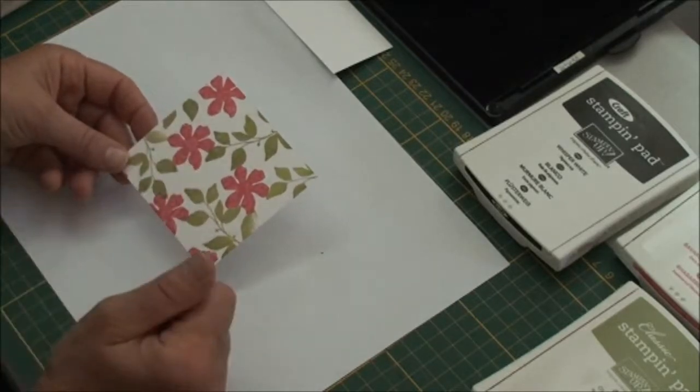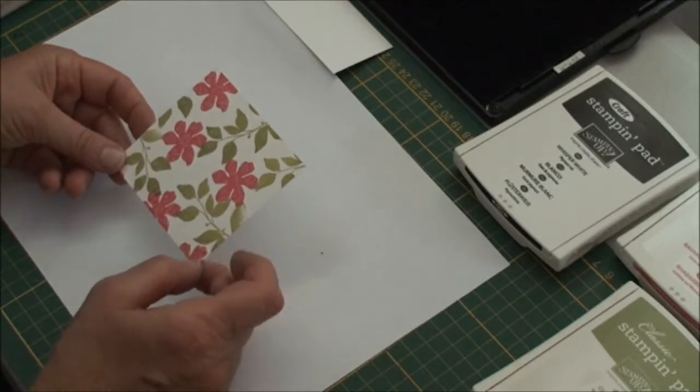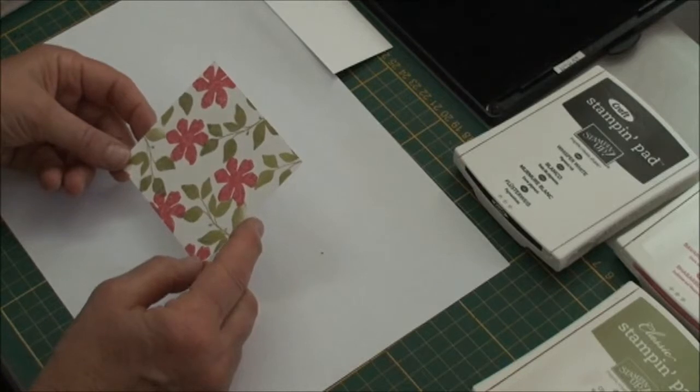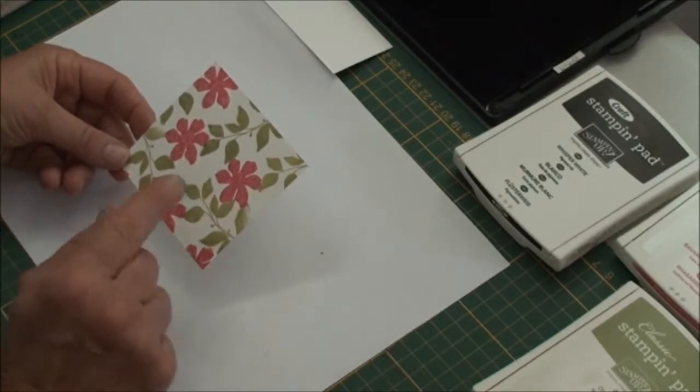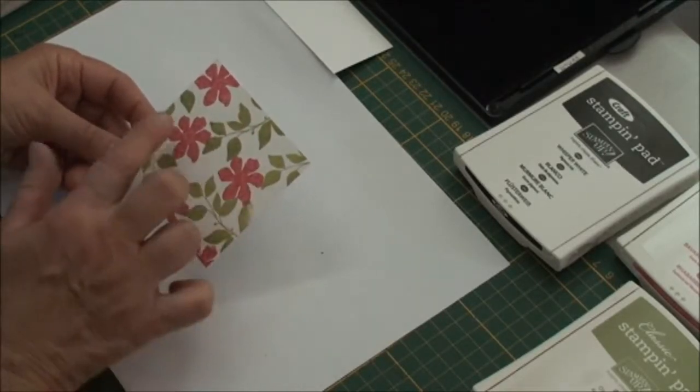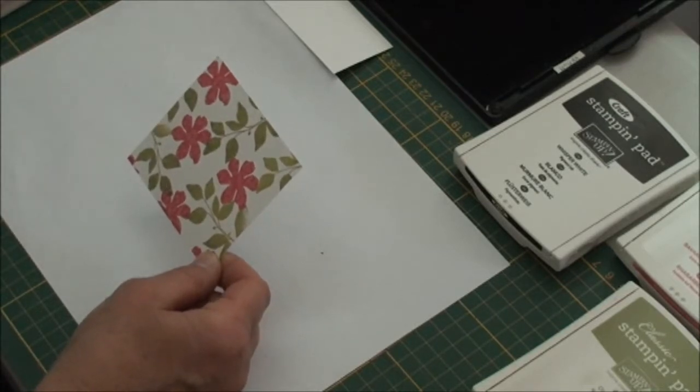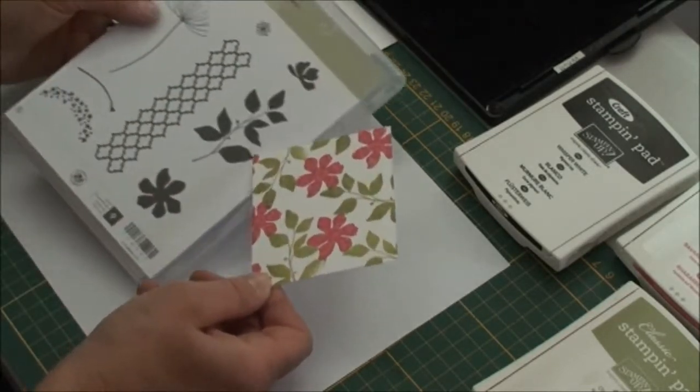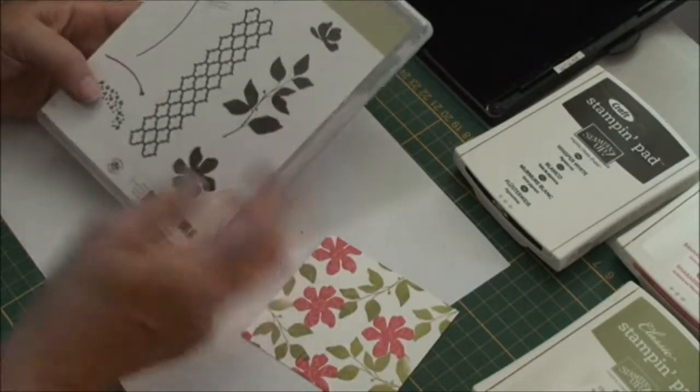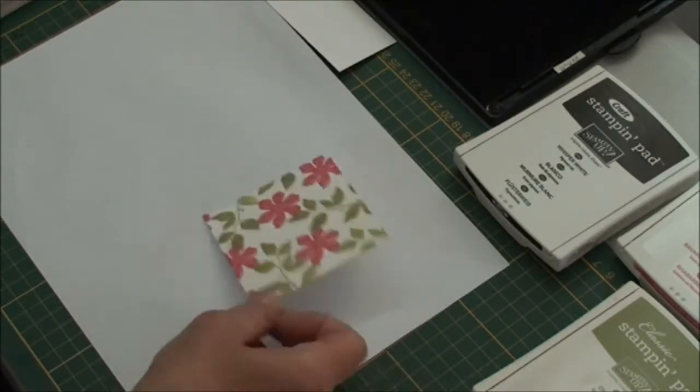What it involves is stamping on the background of some card with a background stamp that has fine detail. I chose Parlour Prints from Stampin' Up, so it's got very fine detail. Stamp it with white craft ink, dry it, and then stamp over it with solid stamps. The solid stamps I used were from Summer Silhouettes from Stampin' Up. I really like this set, it's really versatile.